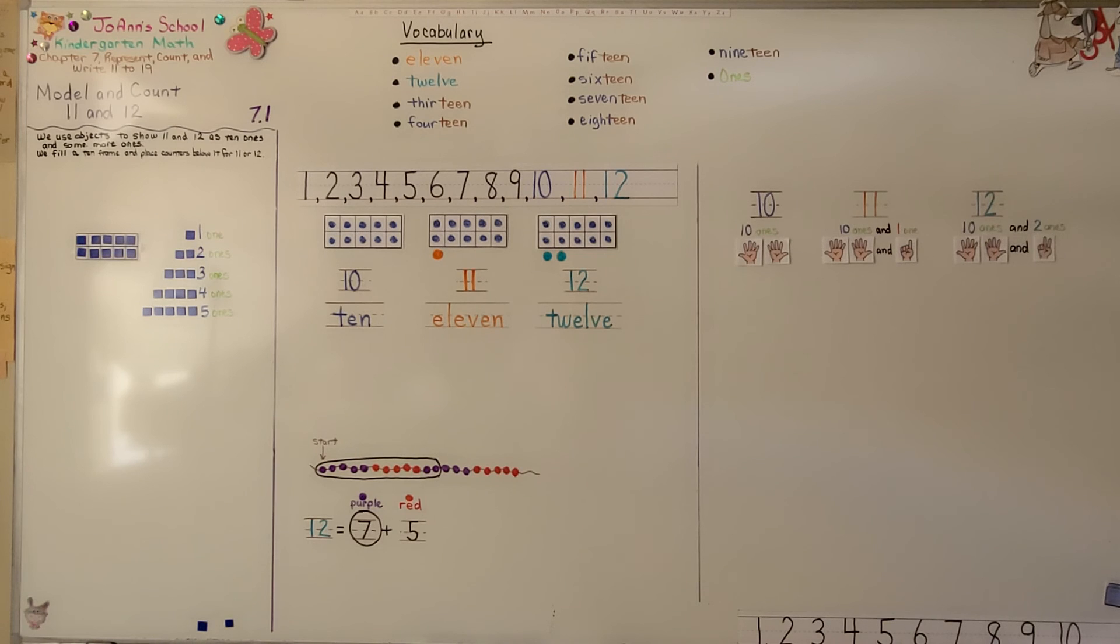So be careful when using a ten frame. Remember, we only put one counter in each space. 11 is one more than 10, and 12 is two more than 10. Our next lesson, 7.2, we're going to count and write 11 and 12. I hope you have a really nice day. Stay safe, and I hope I'll see you next time. Bye.